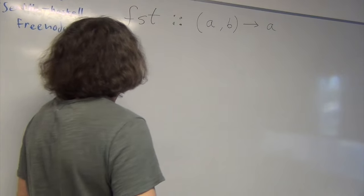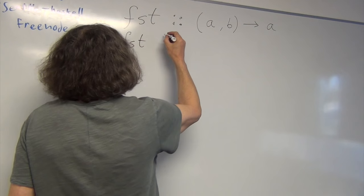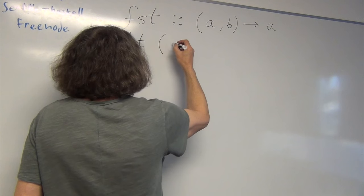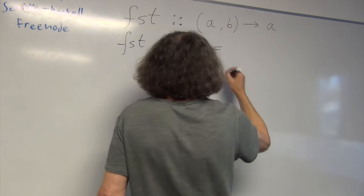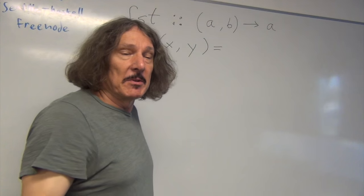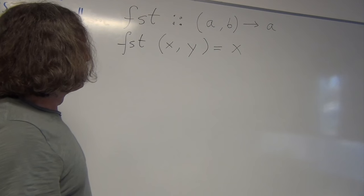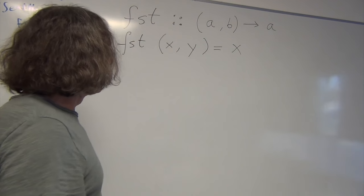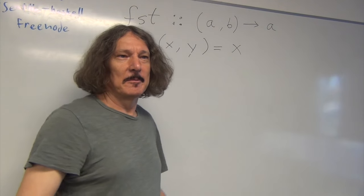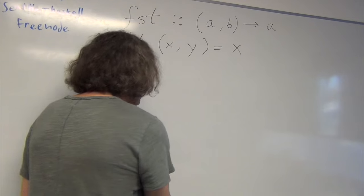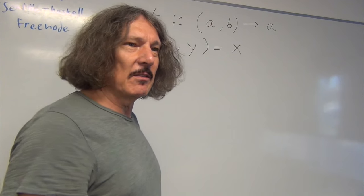We implement `fst` by pattern matching. We write the pattern for it - let's call it `(x, y)` - and it simply returns x, the first component. This works. But why do we need this y? We don't use it - it's a sort of placeholder.